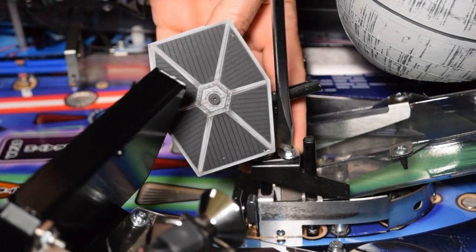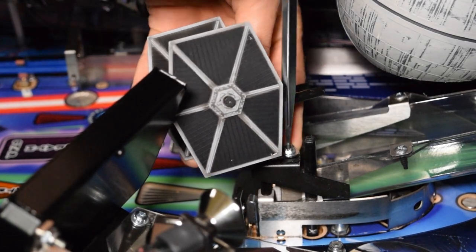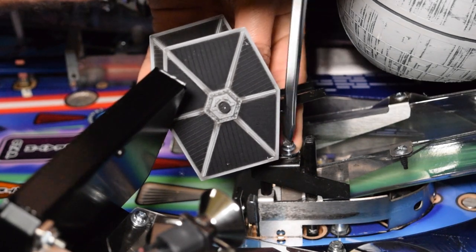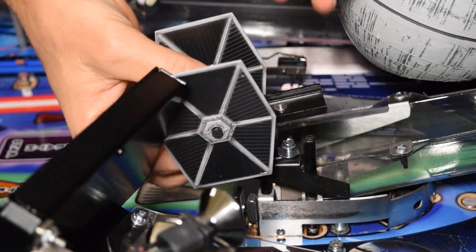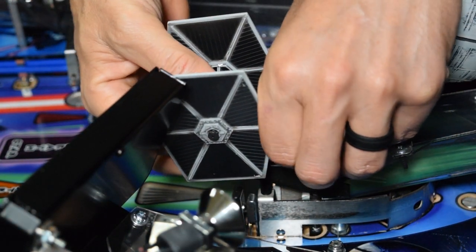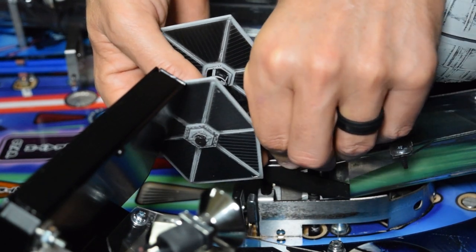To remove the TIE Fighter, grab a flathead screwdriver and remove the screw seen here. I would recommend removing it by hand when there are still a few threads left to avoid dropping the screw into the pinball machine.